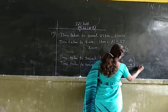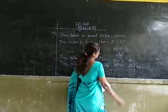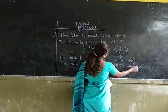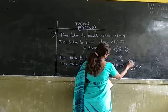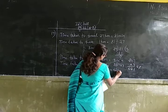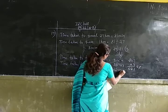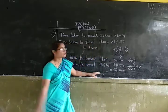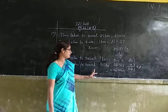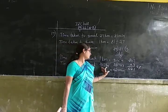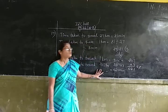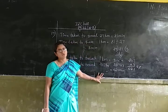3 sevens are 21. 3 zeros are 0, plus 2 is 2. 3 twos are 6. So it takes 621 minutes to travel 207 kilometers.